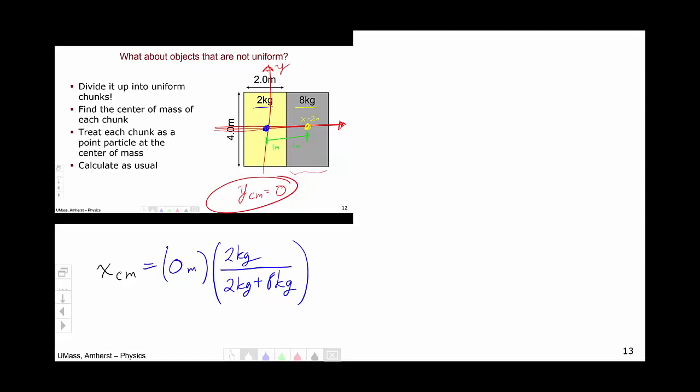we have the value is zero, and the weight is two kilograms over two kilograms plus eight kilograms. For the slab on the right, where I'll move to green because the yellow is kind of hard to see on the white background,